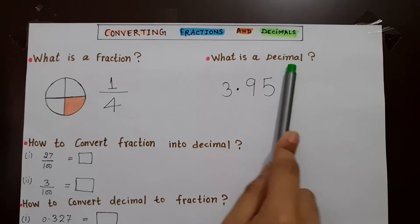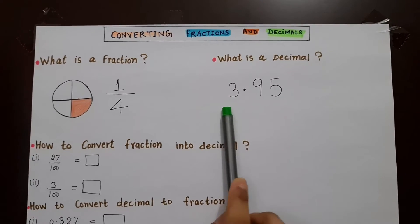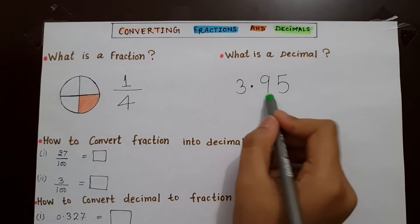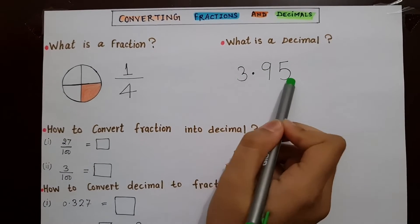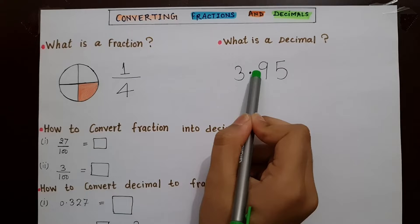What is a decimal? A decimal is a number which is less than 1 but greater than 0. And decimal numbers are always separated by a decimal point.